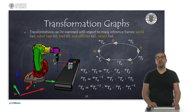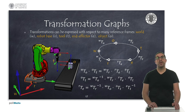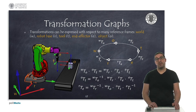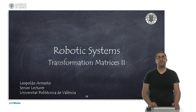All these transformations are easily expressed by multiplying the transformation matrices in the proper order, as shown in the transformation graph. By applying basic algebra, we can find the value of one transformation matrix if the rest are known. During this process, we may need to compute the inverse of some transformation matrices, but as shown before, this is a straightforward operation. In this video, I have explained the basic transformation matrices and their composition. Thank you very much.